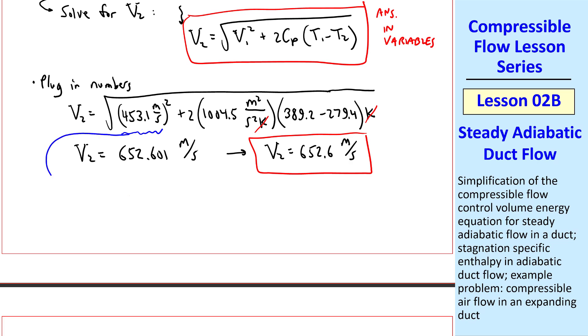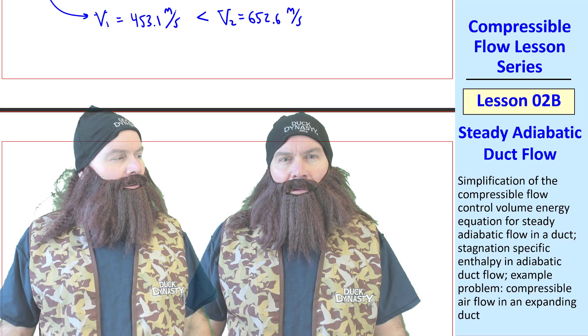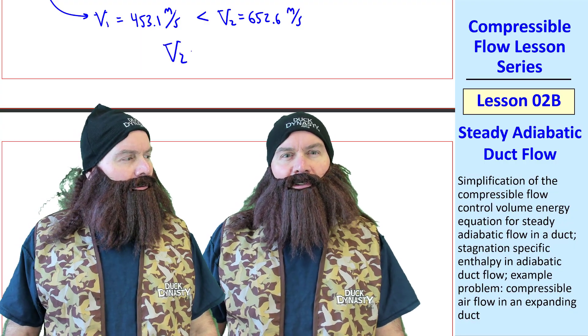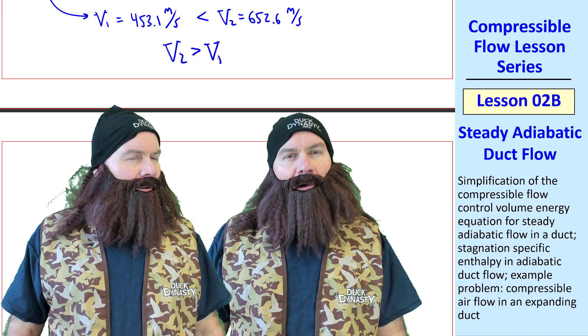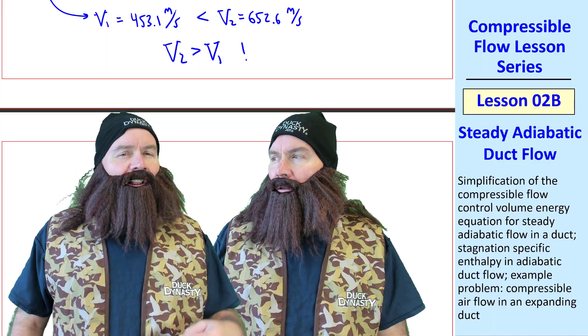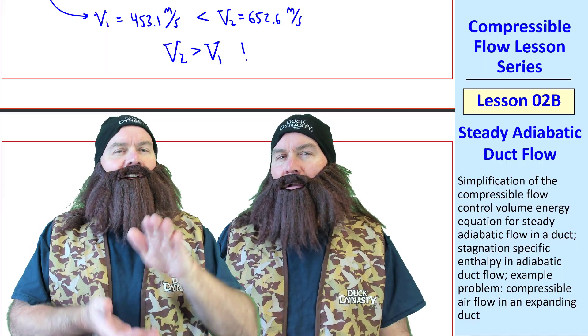Notice that the given value of V1, 453.1 meters per second, is less than V2, which is 652 meters per second. Do any of the students notice anything strange here? Well, this is the opposite of what we're used to for incompressible flow. Yeah, we always said before that velocity goes down as area goes up.